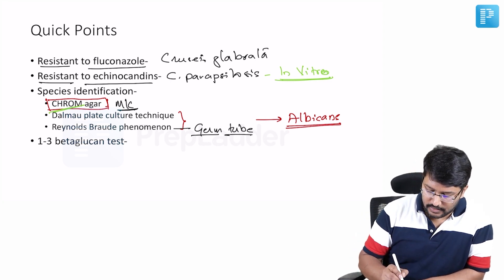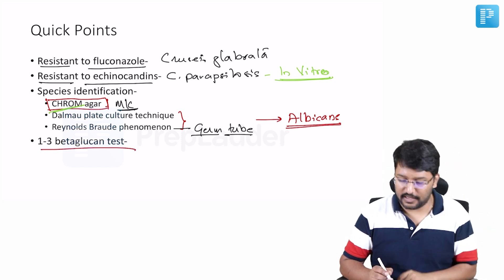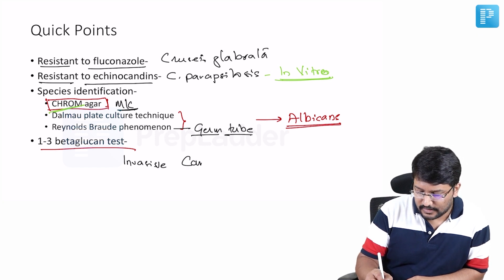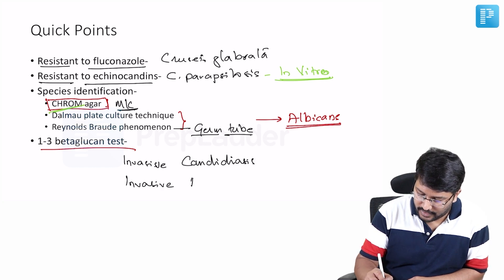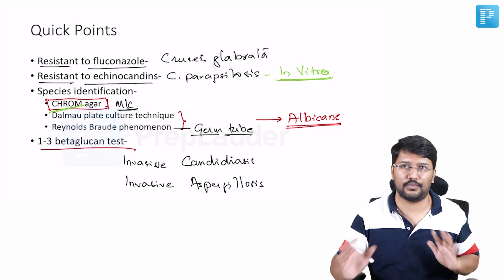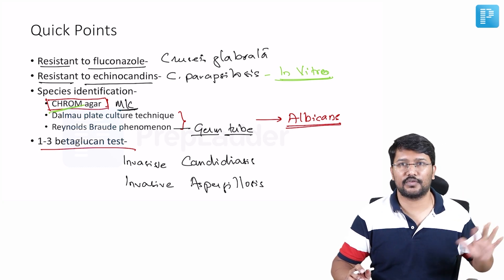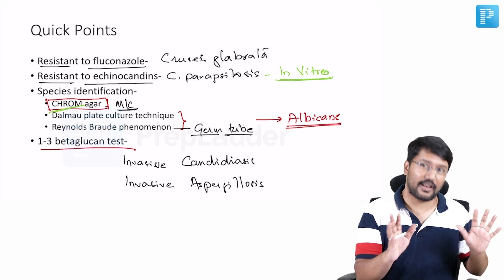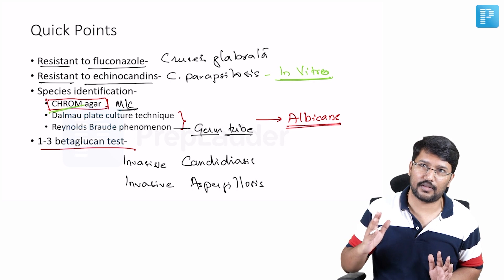The last one I want you to know is about 1,3-beta-glucan test. Now this test is specific for identification of invasive candidiasis and invasive aspergillosis. Can it help us to distinguish between the two? No. It can help you to identify invasive candidiasis or aspergillosis. So when this test comes positive that means there is an invasive fungal infection. It could be albicans, it could be Candida to be more precise. It could be Candida or it could be aspergillosis. Nothing beyond that.